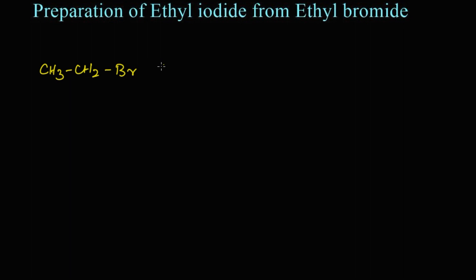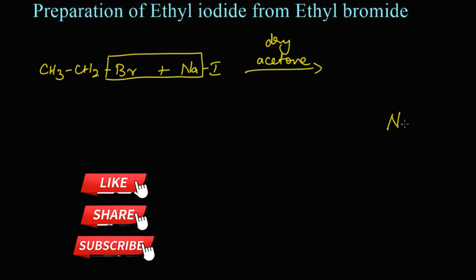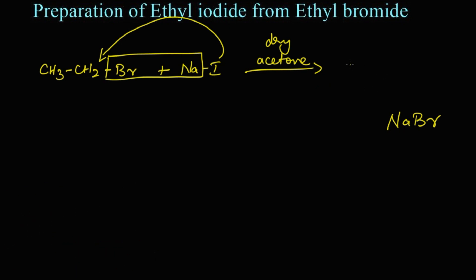Here, ethyl bromide (CH3CH2Br) reacts with sodium iodide (NaI) in the presence of dry acetone. During the reaction, the bromine from ethyl bromide and sodium from sodium iodide leave as sodium bromide (NaBr). The iodine then replaces the bromine, so we get ethyl iodide as the product (CH3CH2I).